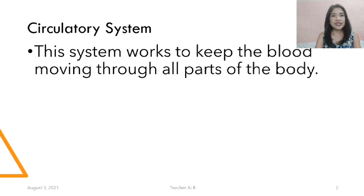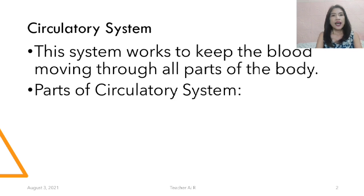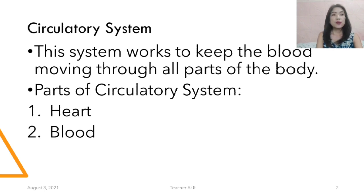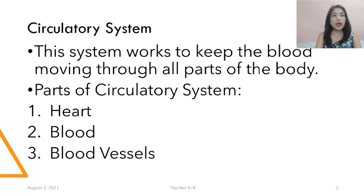This is a system that works to keep the blood moving throughout all parts of the body. The parts of the circulatory system are: number one, the heart; number two, blood; and number three, blood vessel.